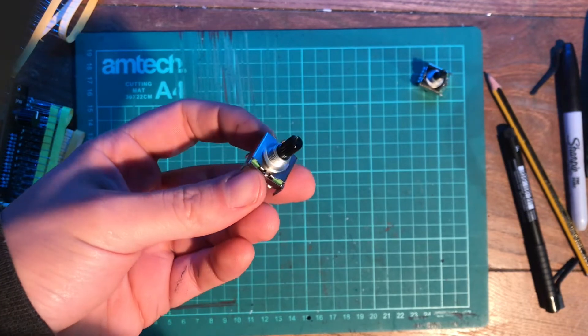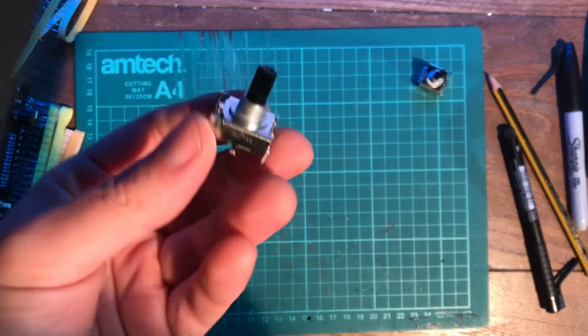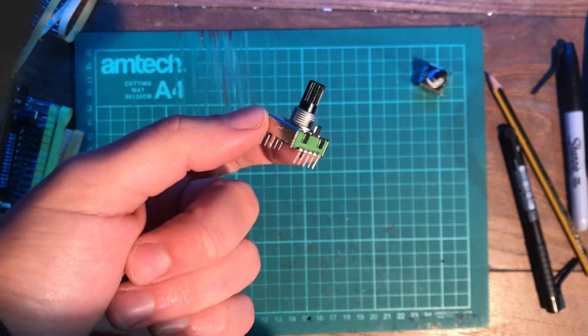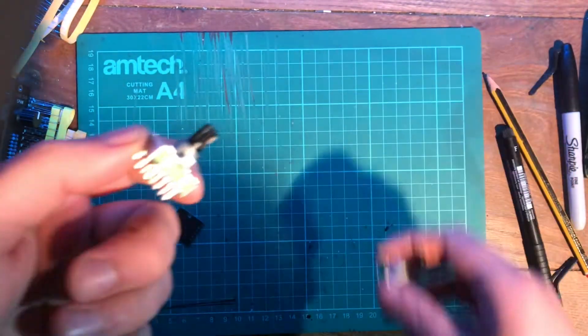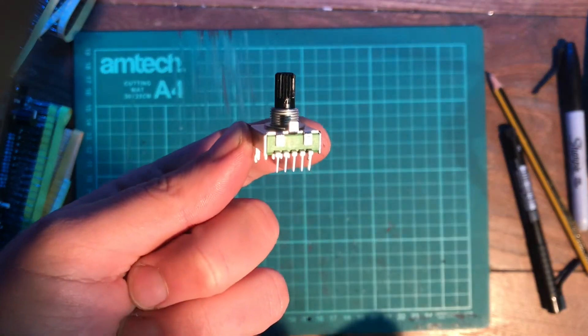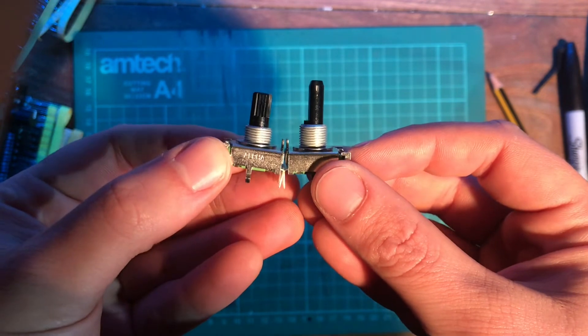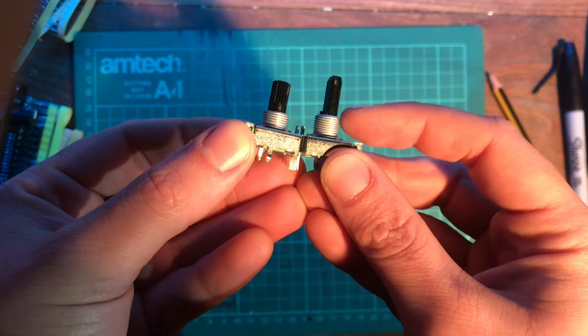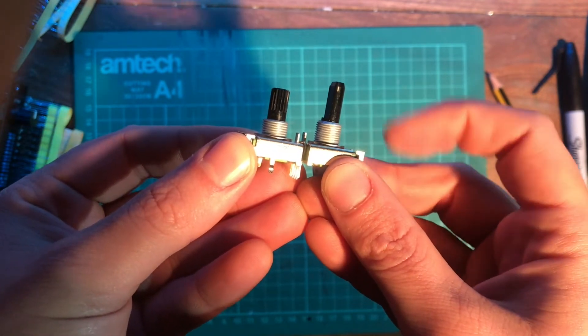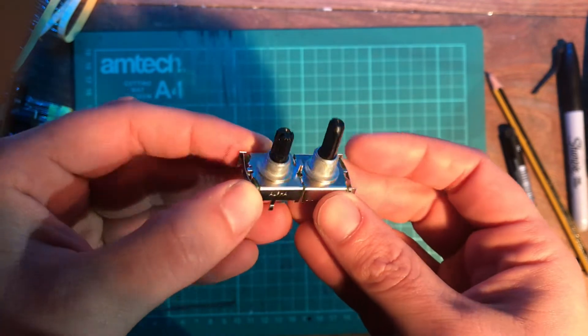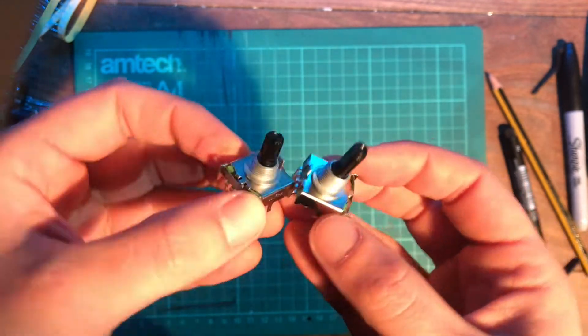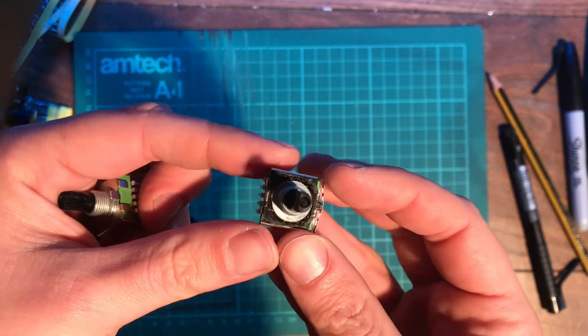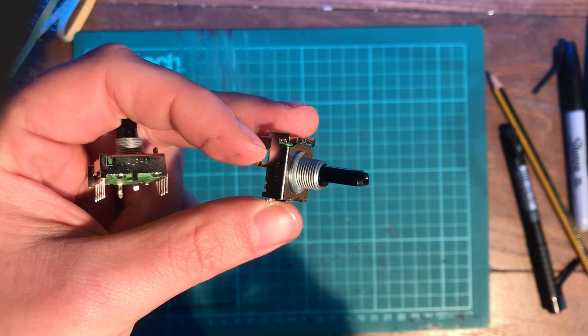There are a couple different options depending on where you prefer to source your components. There's one version on Mouser that is a two pole four throw version that will work, but there's a major difference between this and that version and that's to do with the bushing and shaft size. The bushing is this metal threaded part and the plastic bit is the shaft. You can also notice that on this version it's knurled and on this version it's for a D shaft knob.